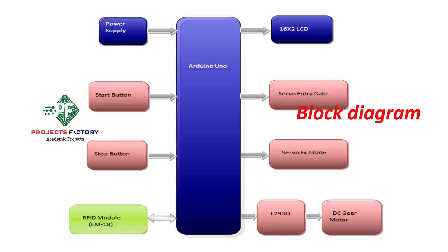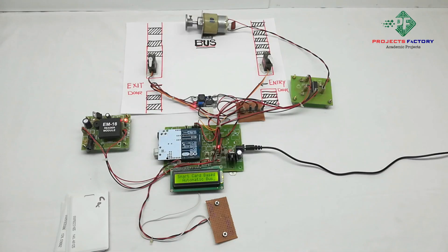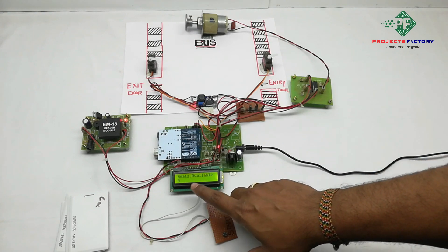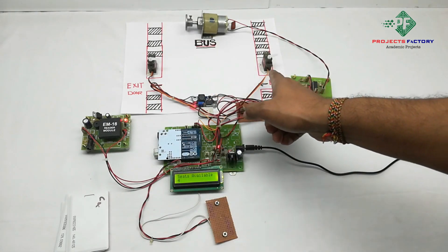Now power on the system. On the LCD it's showing seats availability 4 and the two gates are open.